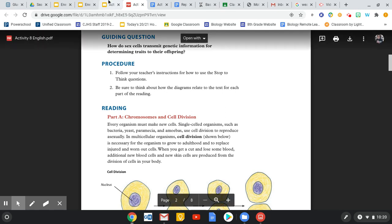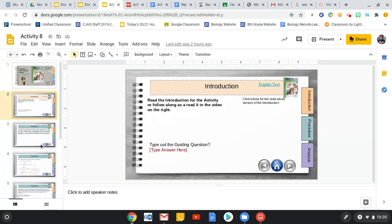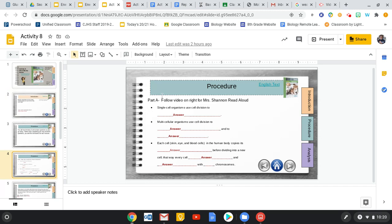So if we're looking at Activity 8, Part A, we have three of them. So let's look for what we're going to be looking for. Single-celled organisms used cell division to blank. Multicellular organisms used cell division to blank. Each cell, skin, eye, and blood cells in the human body copies its blank before dividing into a new cell. So this way we can go ahead and know what we're looking for in the reading.